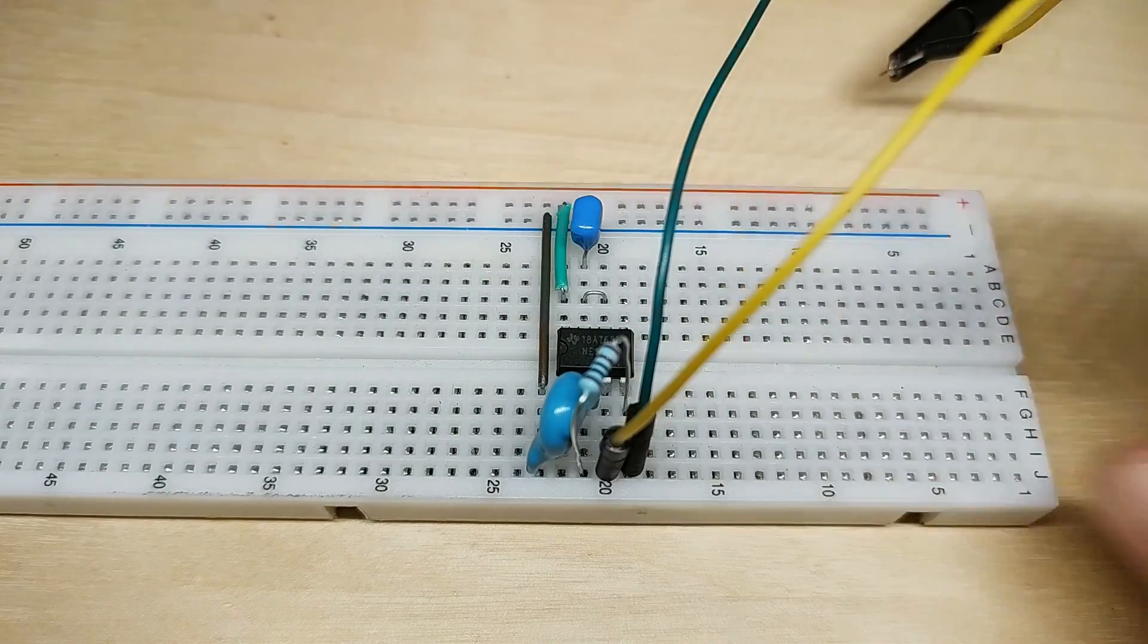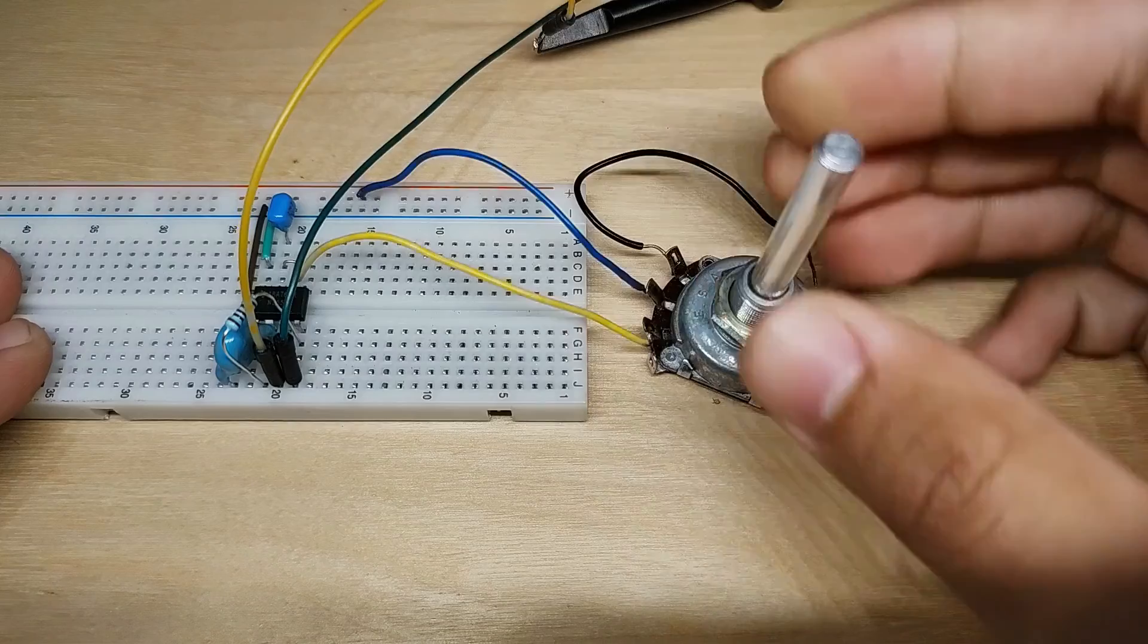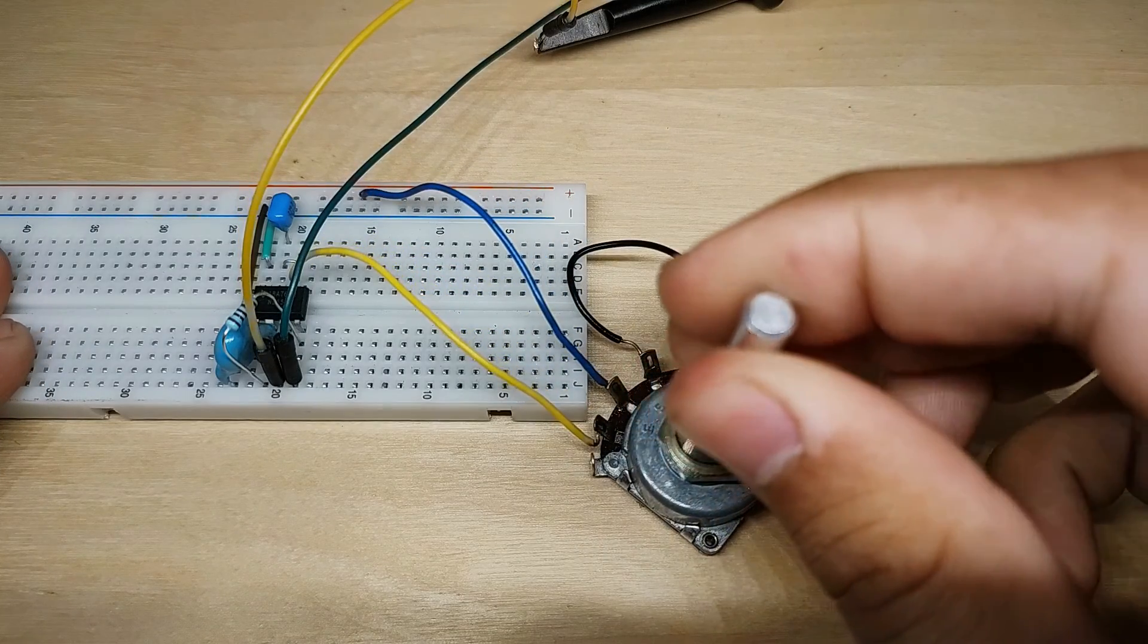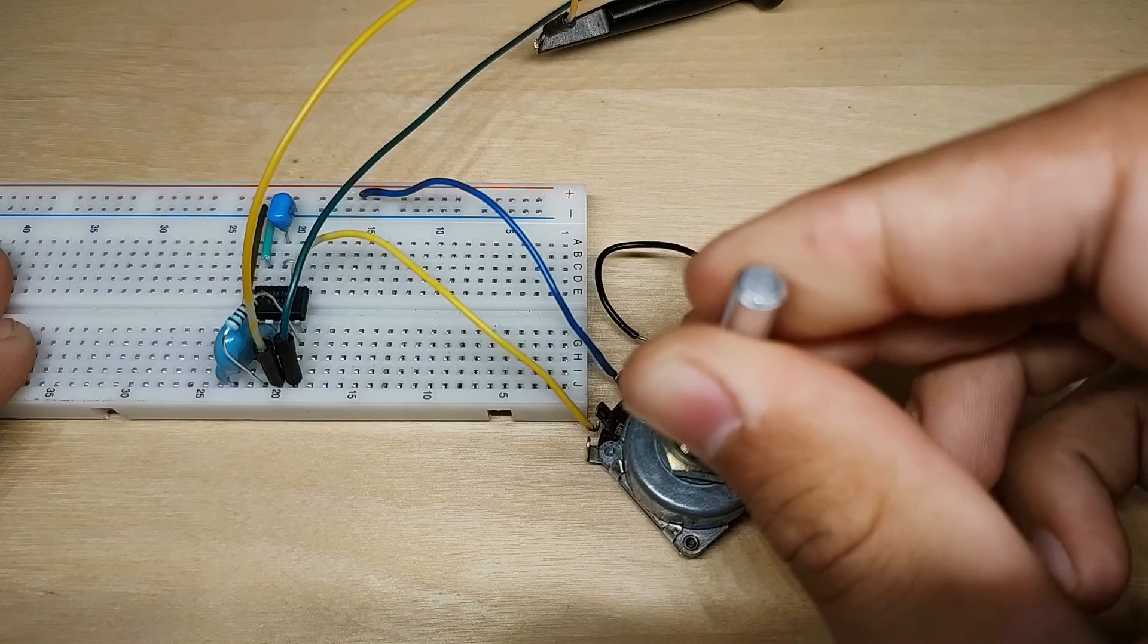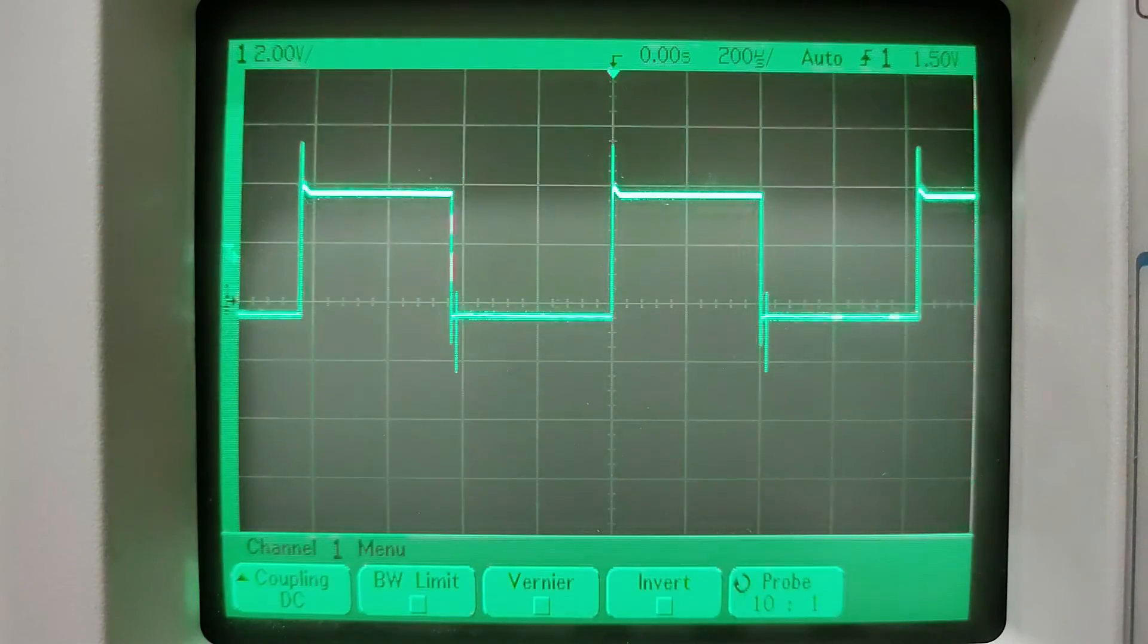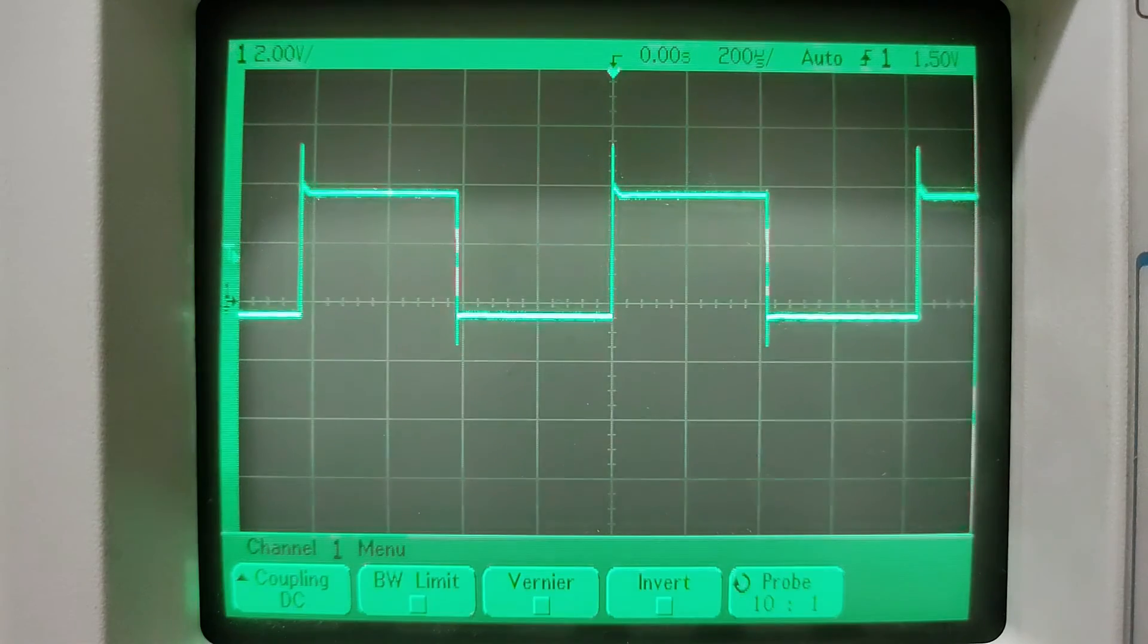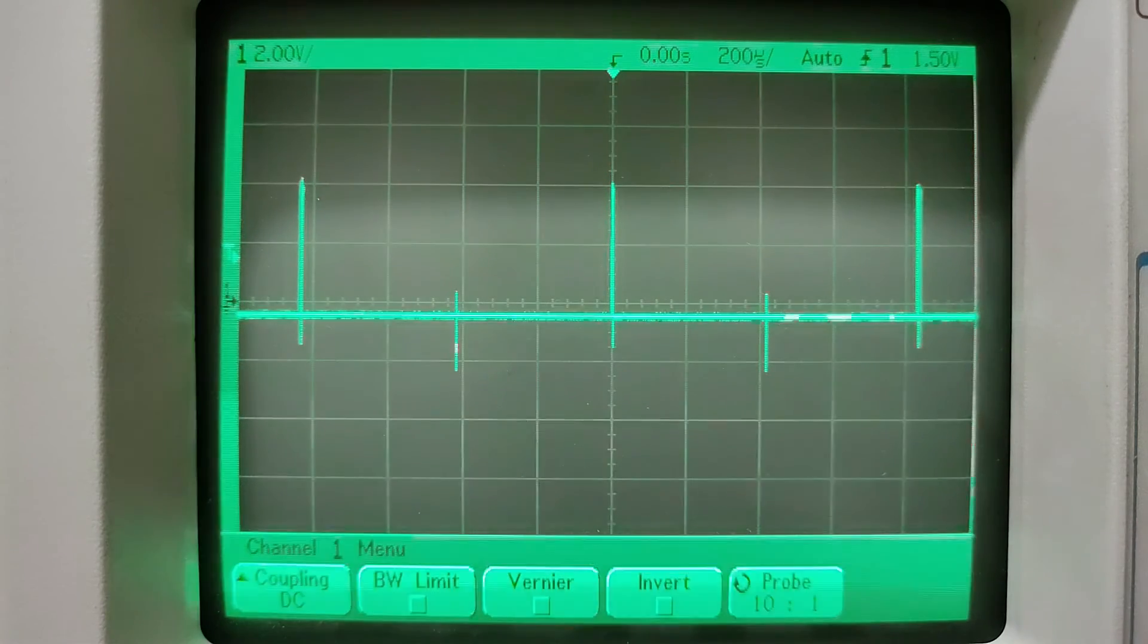So next thing we can do is feed it a square wave at the input, and instead of the 10k resistor on the second RC circuit on pin six and seven we can put a 10k potentiometer. Now if we look at the waveform on the oscilloscope we can see that it goes between 0 and 50% in this case, because the input duty cycle is the maximum that we can achieve.